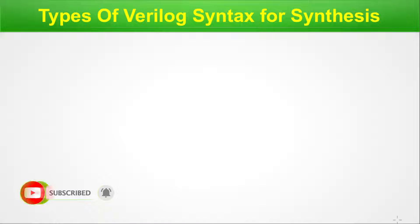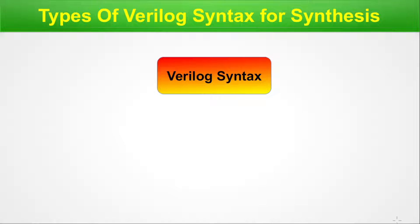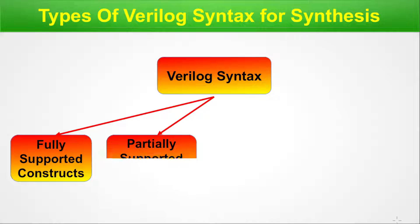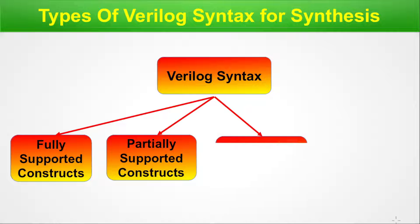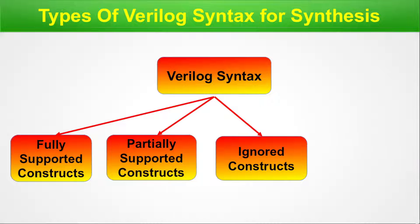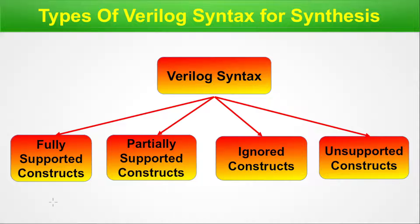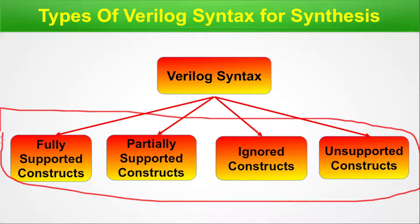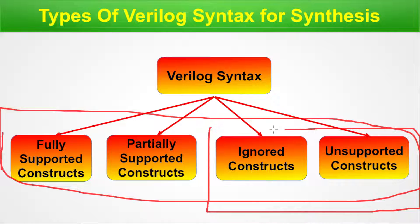Let us make a classification of types of Verilog syntax for synthesis. The total set of Verilog syntax can be subdivided into four subsets: fully supported constructs, partially supported constructs, ignored constructs, and unsupported constructs. When coding for a VLSI chip, you must be well aware of ignored and unsupported constructs, and you must know the conditions of partially supported constructs so that your RTL code stands good for VLSI chip design.